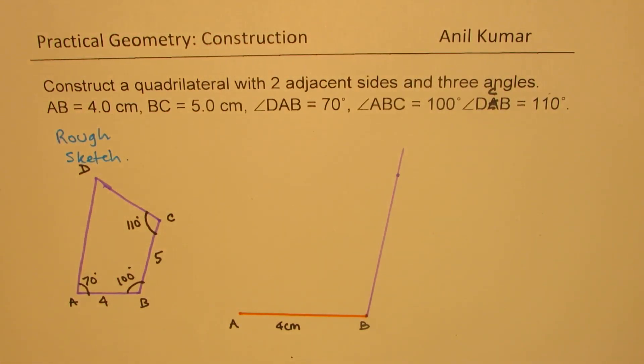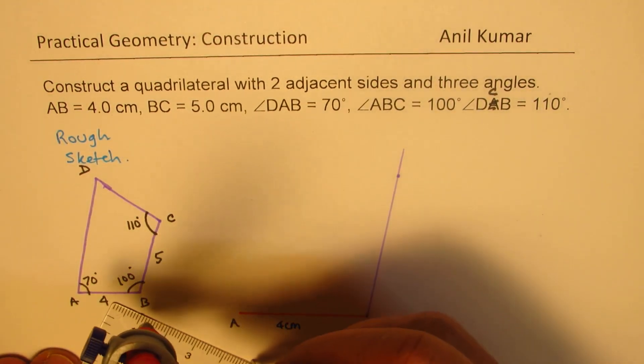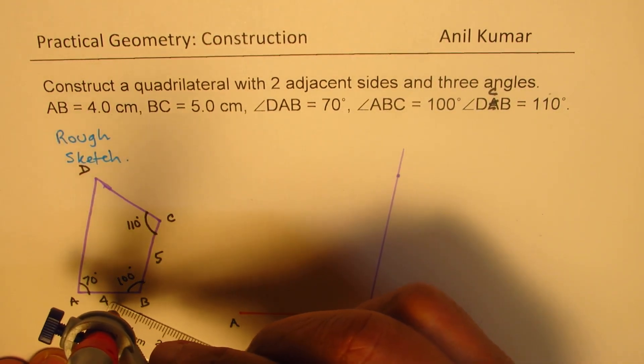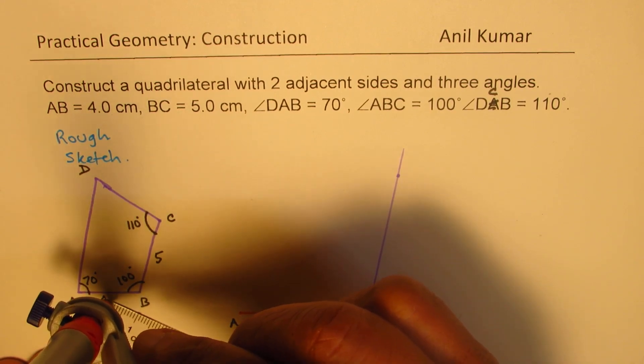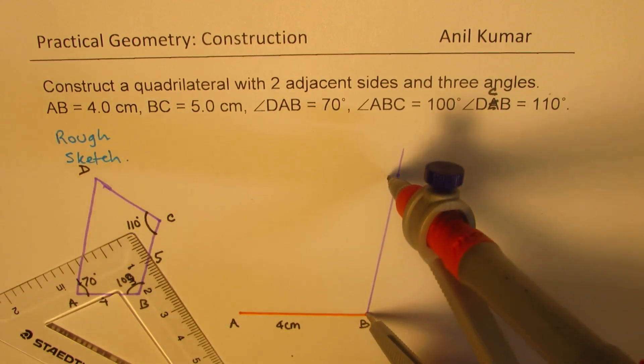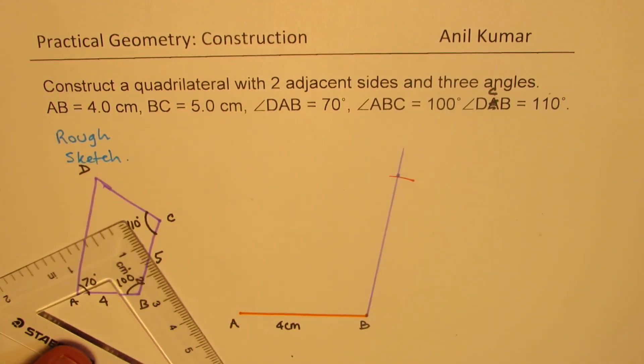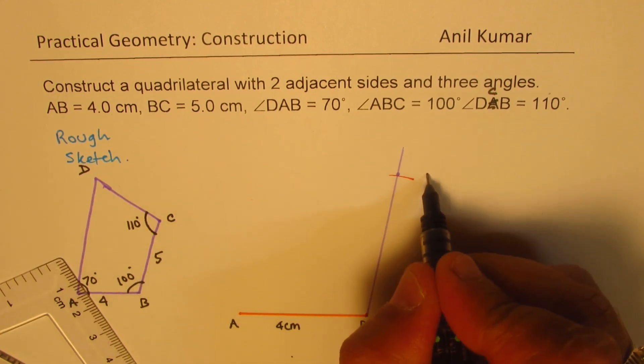To get the value of 5, we can actually open the compass 5 units. And from here, we can cut it equal to 5 units. So that becomes the point C for us. So we have our point C.